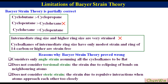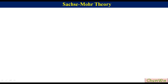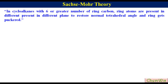Sachse-Mohr Theory. Later, Sachse-Mohr proposed that in cycloalkanes with six or greater number of ring carbons, ring atoms are present in different planes to restore the normal tetrahedral angle, and the ring gets puckered. The ring free from angle strain is called a strainless ring.